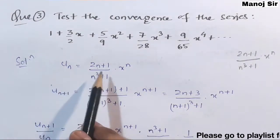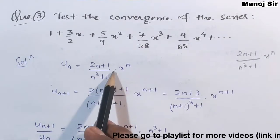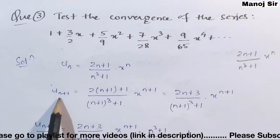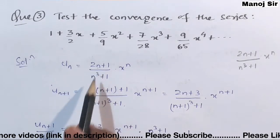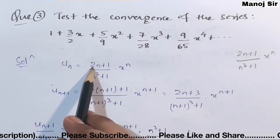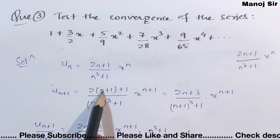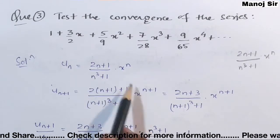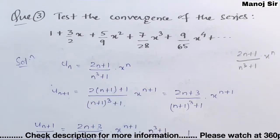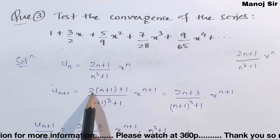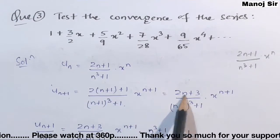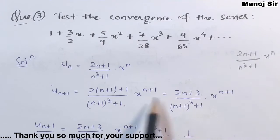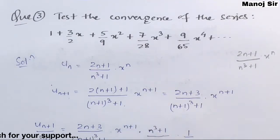Since we have found UN = (2N+1)/(N³+1) · xᴺ, we can easily find U(N+1) by replacing N with N+1. That gives U(N+1) = (2(N+1)+1) / ((N+1)³+1) · x^(N+1), which simplifies in the numerator to 2N+3, with the denominator and x part as written.